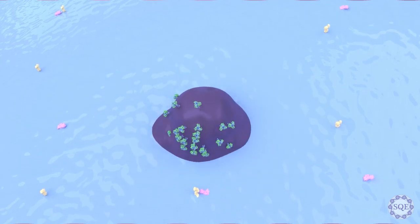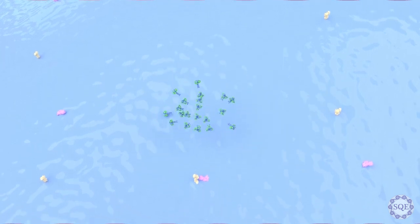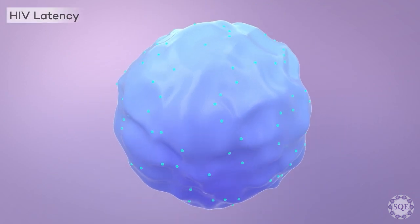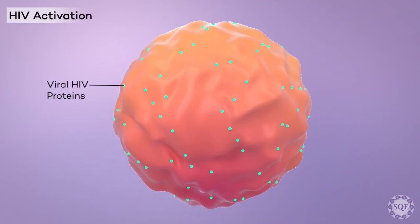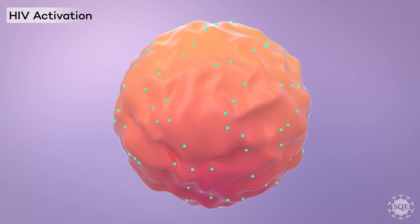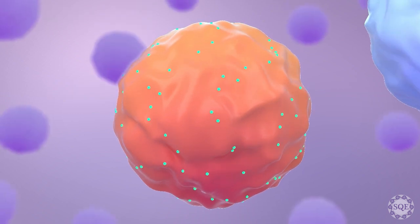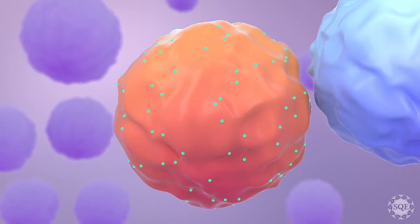HIV latency is a reversible state where the virus stops replicating to evade immune recognition. Researchers are looking at new ways to reactivate HIV so that the immune system can recognize these viral cells.